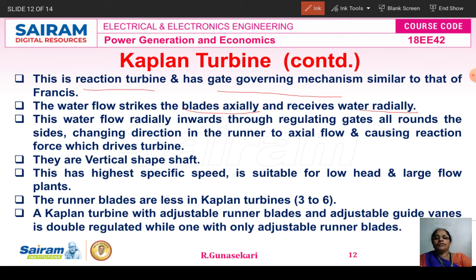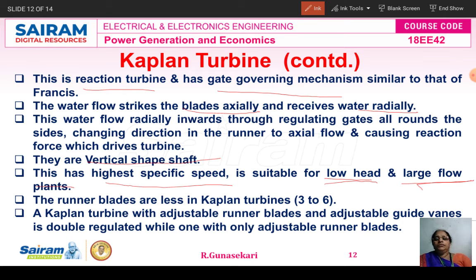The Kaplan turbine uses a vertical shaft. It has the highest specific speed — specific speed being one of the key characteristics of water turbines. This turbine is most suitable for low head and large flow plants. The runner blades are fewer in number — between three to six blades only. The Kaplan turbine has both adjustable runner blades and adjustable gate vanes, providing double regulation, making it highly adaptable.